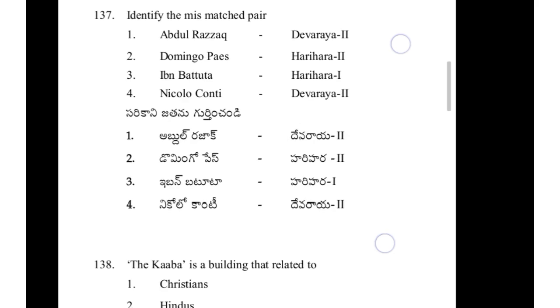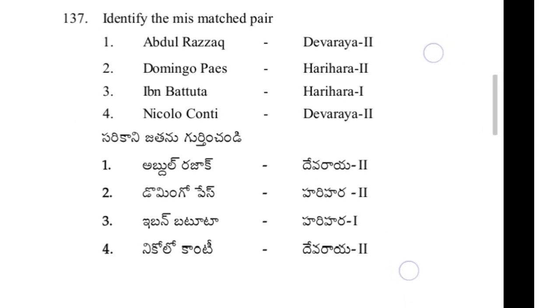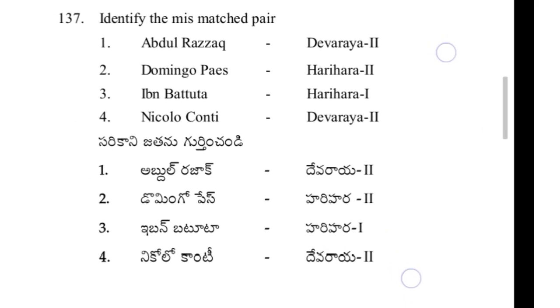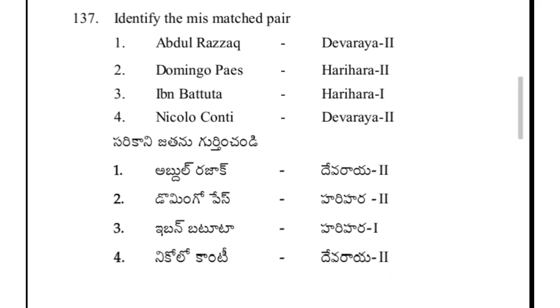Identify the mismatch pair — option 2 is the answer; Domingo piece Hari Hara 2 is the mismatch, wrong.